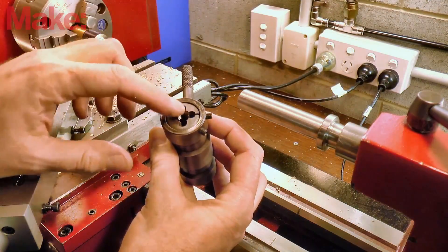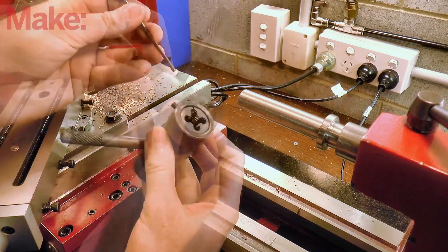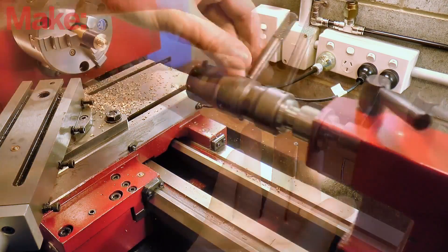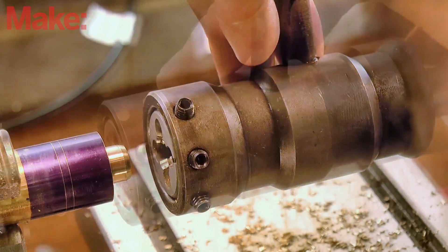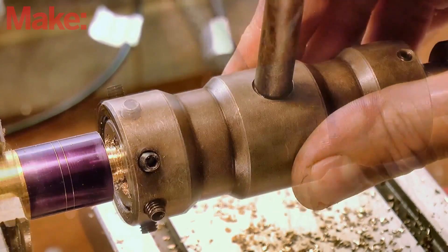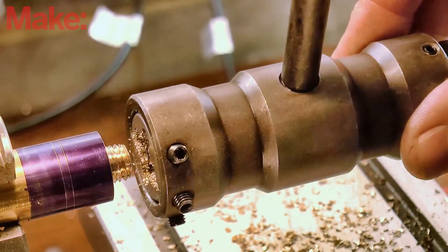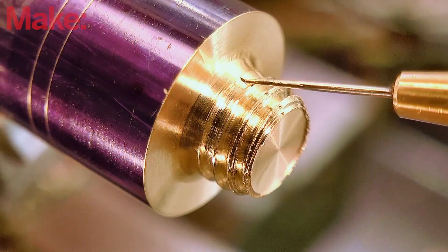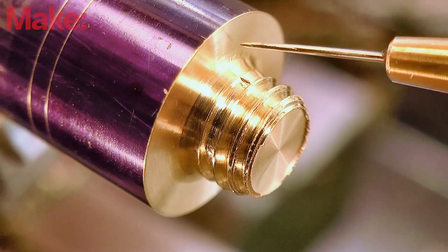A quick taper on the end helps lead the threading die onto the work, and a tailstock die holder helps keep the die true to the axis of the lathe while forming that thread. Aim for the thread to stop just short of the fillet, to leave a nice clean curve for the o-ring to seat into when it's compressed.